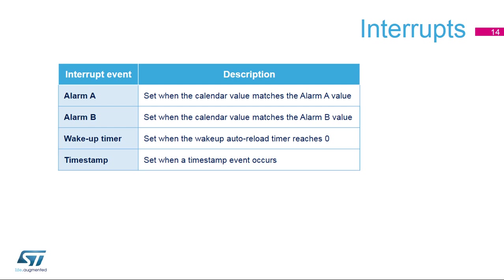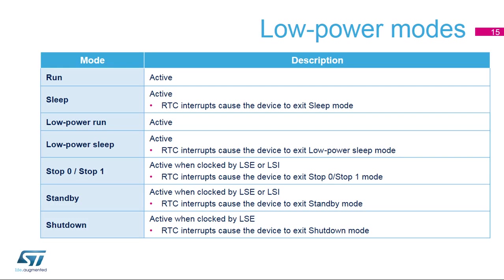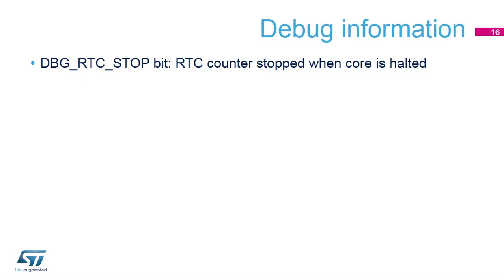Several RTC events can generate an interrupt, and all interrupts can wake the microprocessor up from all low-power modes. The alarm A interrupt is set when the calendar value matches the alarm A value; similarly, alarm B interrupt is set when the calendar value matches the alarm B value. The wake-up timer interrupt is set when the wake-up auto-reload timer reaches zero. The timestamp interrupt is set when a timestamp event occurs. The RTC peripheral is active in all low-power modes and RTC interrupts cause the device to exit the low-power mode. In stop 0, stop 1 and standby modes only the LSE or LSI clocks can be used to clock the RTC; only the LSE is functional in shutdown mode. A debug interface bit is available to stop the RTC counter when the core is halted for debugging.